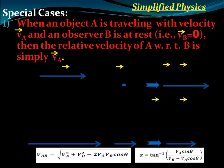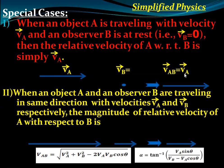Now let's see some special cases. First, when object B is at rest — V_B equals zero — the relative velocity of A with respect to B is simply V_A itself. Second, when objects A and B are traveling in the same direction with velocities V_A and V_B, the relative velocity V_AB equals V_A minus V_B.